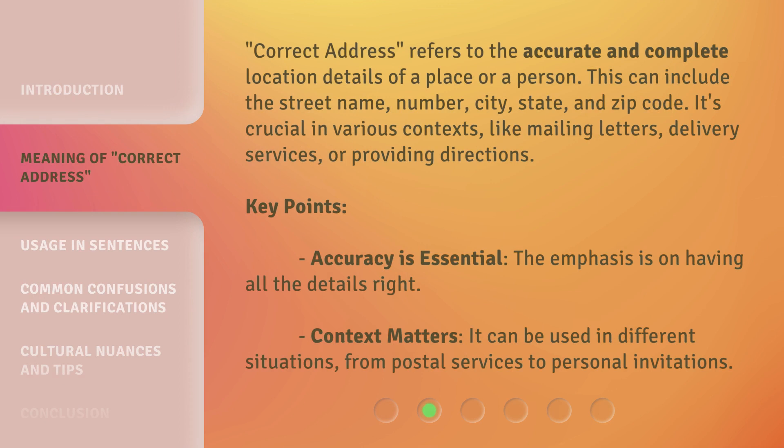Correct address refers to the accurate and complete location details of a place or a person. This can include the street name, number, city, state, and zip code. It's crucial in various contexts, like mailing letters, delivery services, or providing directions.